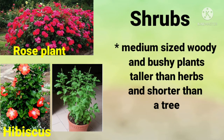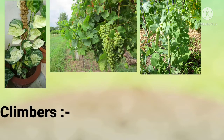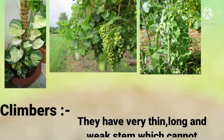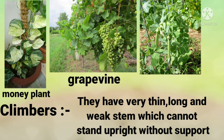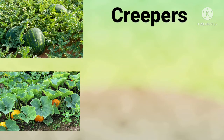Next are climbers. Climbers are plants that have a very thin, long, and weak stem which cannot stand upright. They need some support to grow straight. Some examples of climbers are money plant, grapevine, and pea plant.